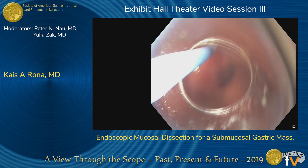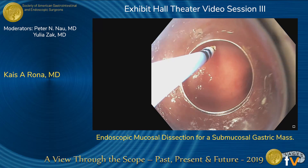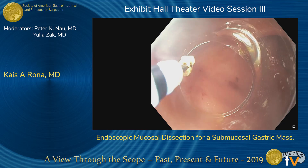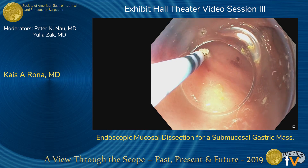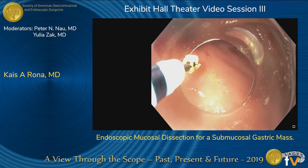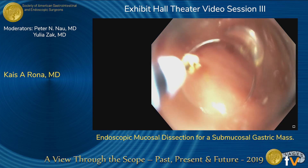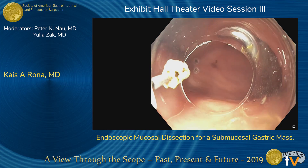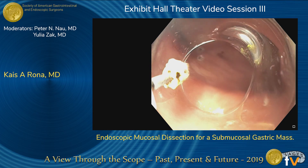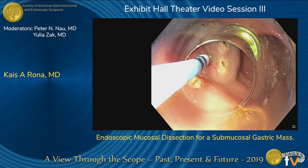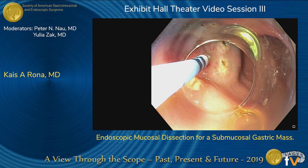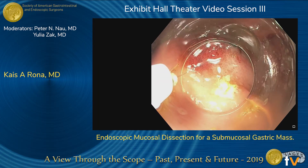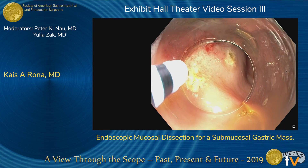We do this circumferentially. What's important is you want to maintain about a 1- to 2-millimeter margin of normal tissue between your markings and the actual mass. Once we've marked circumferentially, we perform our lift, as you can see here. We perform the lift with diluted methylene blue, though other commercial gels are available.